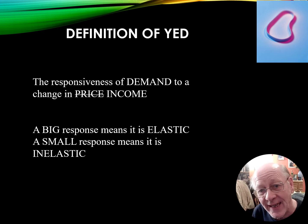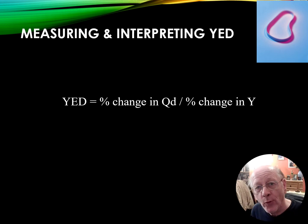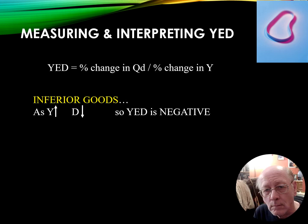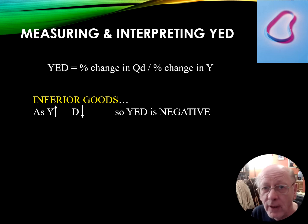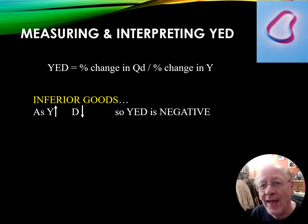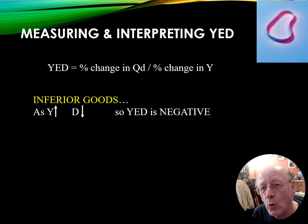If we get a low number it means it's inelastic. The formula is: percentage change in quantity demanded divided by percentage change in income. With price elasticity of demand the result is almost always negative, so we can effectively ignore the minus sign. But with income elasticity of demand the sign is actually quite important — there are some goods called inferior goods where as we get richer we actually buy less of them.